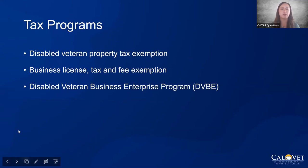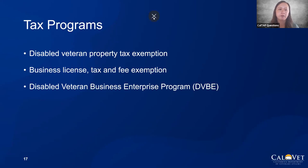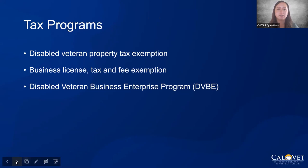We also have tax programs. The Disabled Veterans Property Tax Exemption — if you are rated at 100% through the federal VA, you're able to contact your county assessor's office to see about getting that exempted. There is a cap to it, so be sure to look into that. There's also a business license tax and fee exemption for business owners. And lastly, the Disabled Veterans Business Enterprise Program, also known as DVBE — if you're wanting to sell goods to the state, you can look this up on our website for more information.